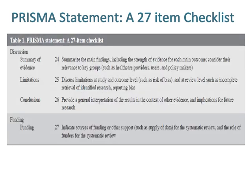Item 24 in discussion regarding summary of evidence is to summarise the main findings including the strength of evidence for each main outcome, and consider their relevance to key groups such as healthcare providers, users, and policy makers. Item 25 regarding limitations is to discuss limitations at study and outcome level, such as risk of bias, and at review level such as incomplete retrieval of identified research and reporting bias.